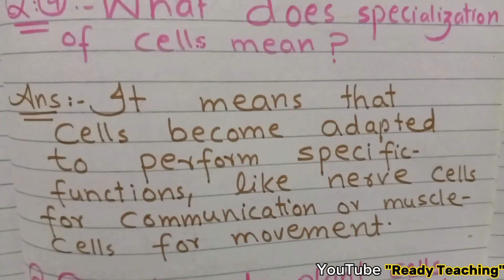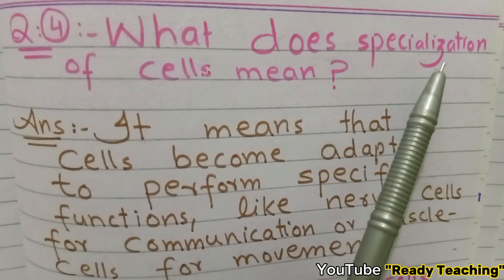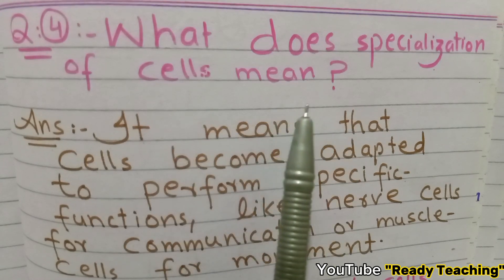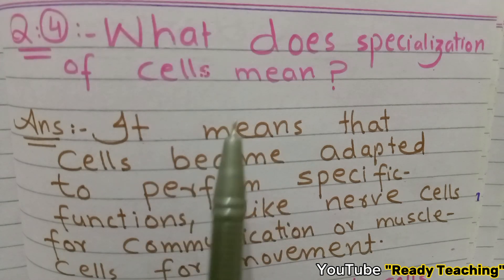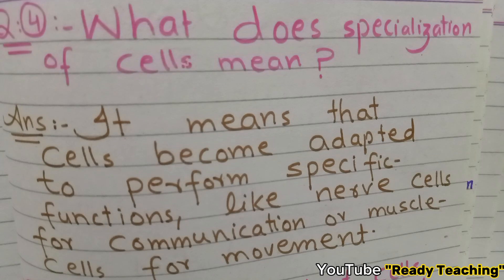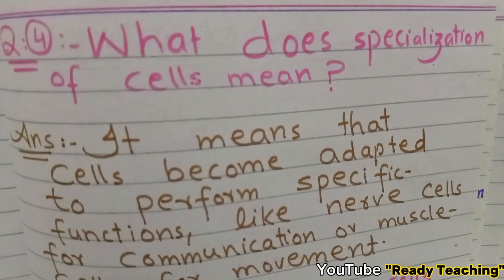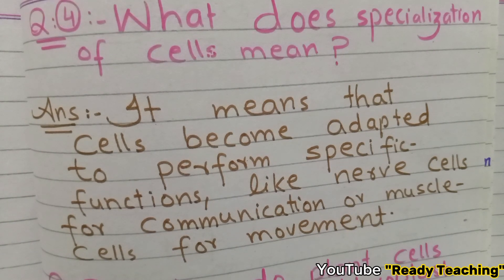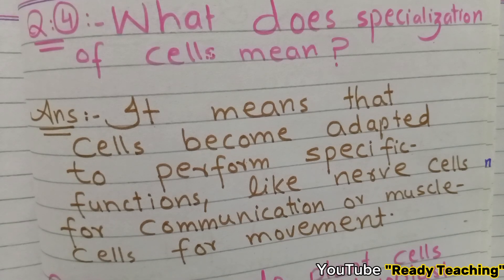Question 4: What does specialization of cells mean? In our body there are different types of cells. For specific functions, cells become specialized — their structure is arranged in a specific way to perform specific functions. Cells become adapted to perform specific functions.